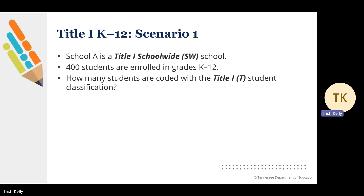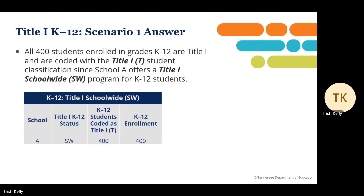We'll review a few scenarios, starting with School A. School A is a Title I school-wide school. 400 students are enrolled in grades K-12. How many students are coded with a Title I-T student classification? All 400 students enrolled in grades K-12 are Title I and are coded with a Title I-T student classification, because School A offers a Title I school-wide program for students in grades K-12.